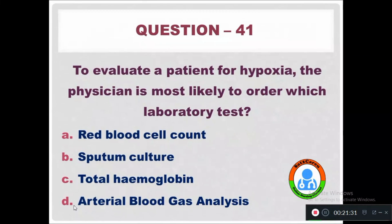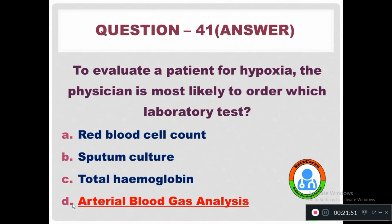Question 41: To evaluate a patient for hypoxia, the physician is most likely to order which laboratory test? Option A: Red blood count. Option B: Sputum culture. Option C: Total hemoglobin. Option D: Arterial blood gas analysis. The right answer is arterial blood gas analysis, which should be assessed when the patient is suspected of hypoxia.